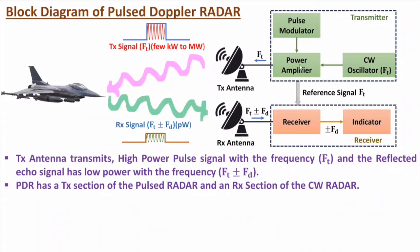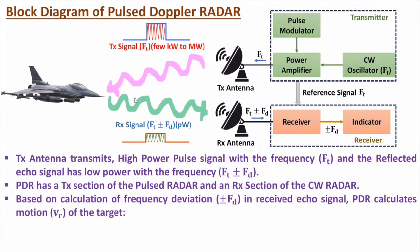In this block diagram, the transmitter of PDR is a transmitter of Pulsed Radar system, and the receiver section is as per CW Radar system — or Doppler Radar system. In CW Radar system, we identify Doppler frequency. Here we have an echo signal in which we have deviation in frequency — that is Doppler frequency. This PDR is calculating relative velocity, and that frequency deviation formula is fd = 2VR / λ, where VR is the relative velocity.